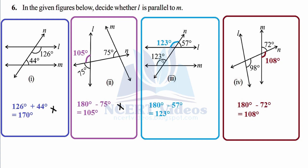In the third figure, angles 123° and 57° are given. Using the linear pair property: 180° minus 57° equals 123°. Since the corresponding angles are both 123° and are equal, l is parallel to m. In the fourth figure, angles 98° and 72° are given. Computing 180° minus 72° equals 108°, which does not equal 98°, so l is not parallel to m. Always check whether the statement confirms parallel lines before applying properties.